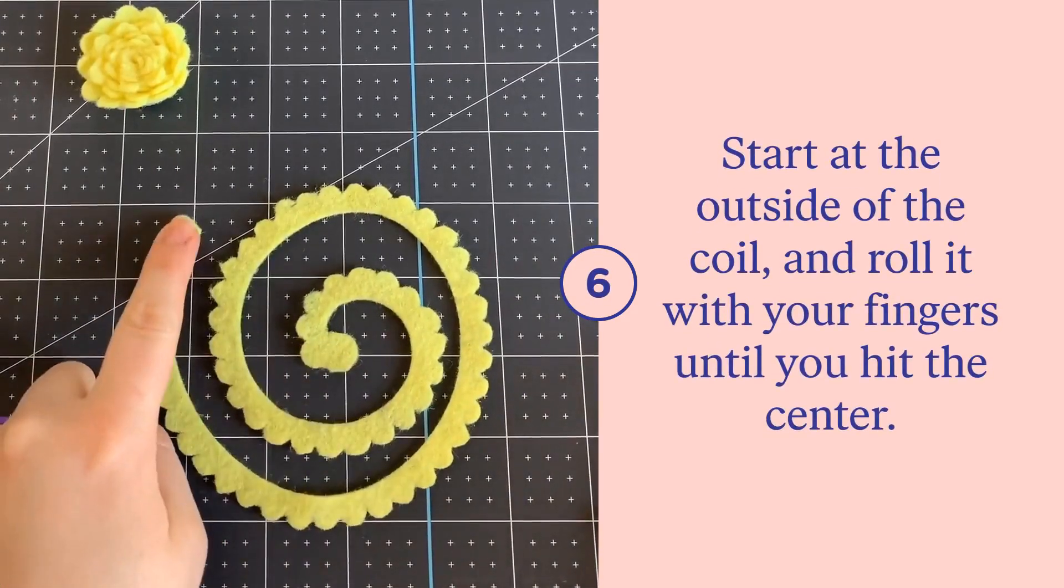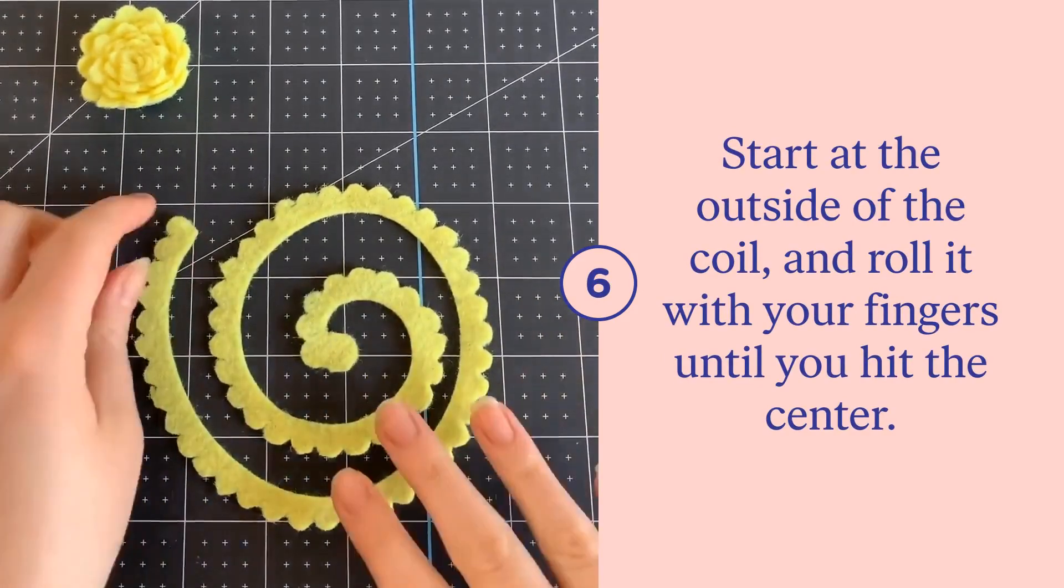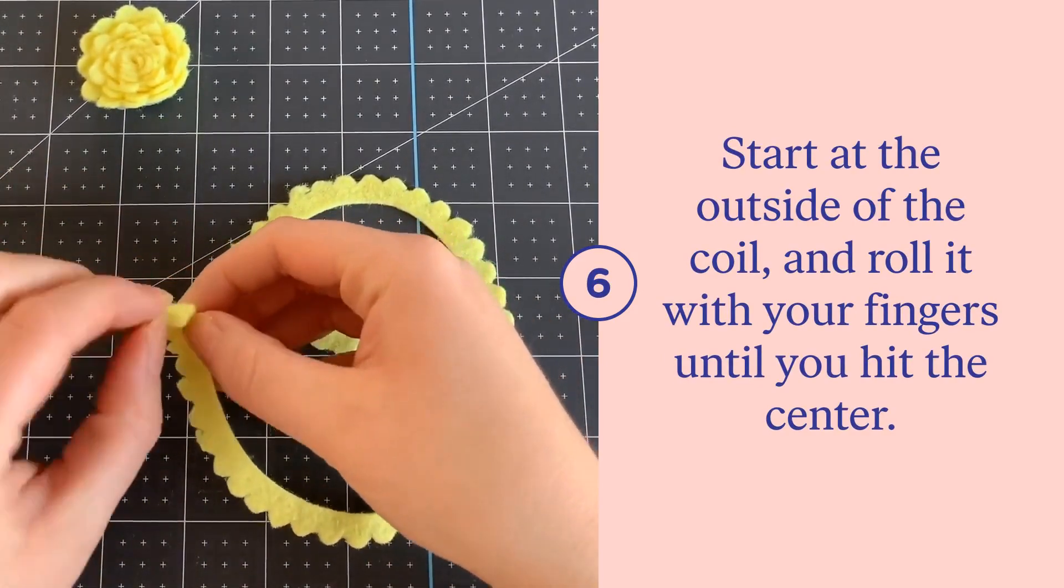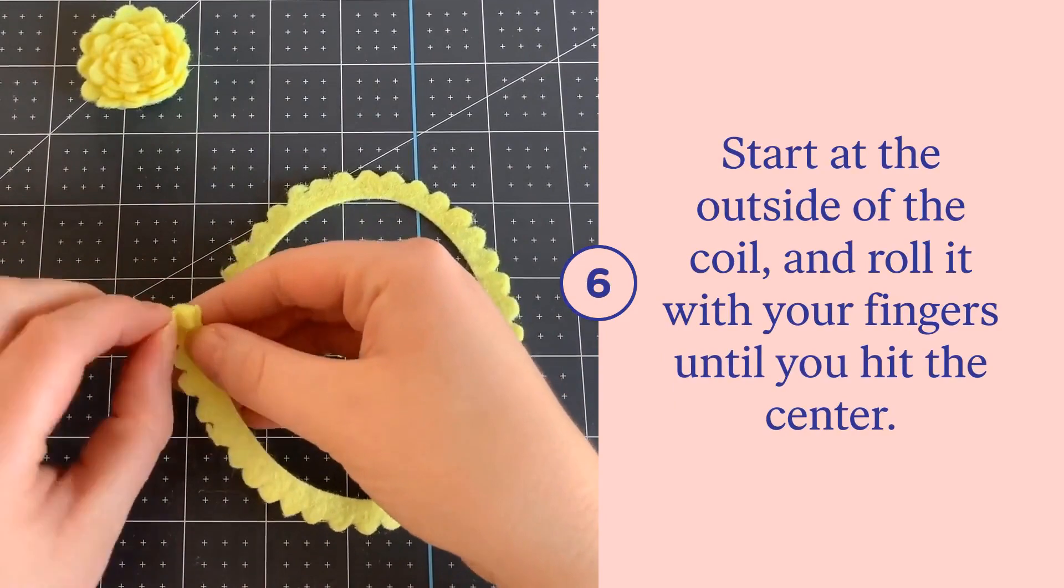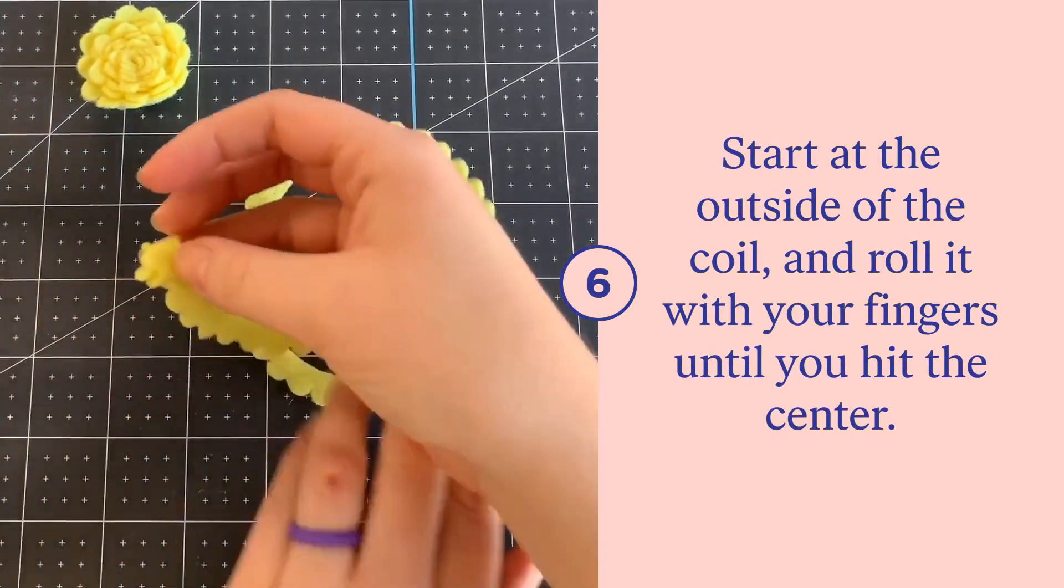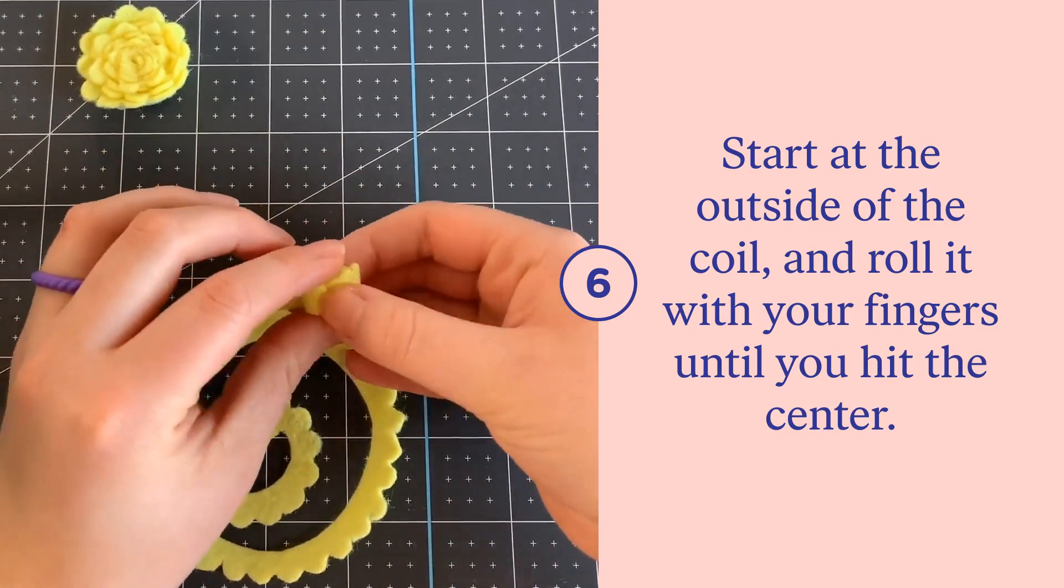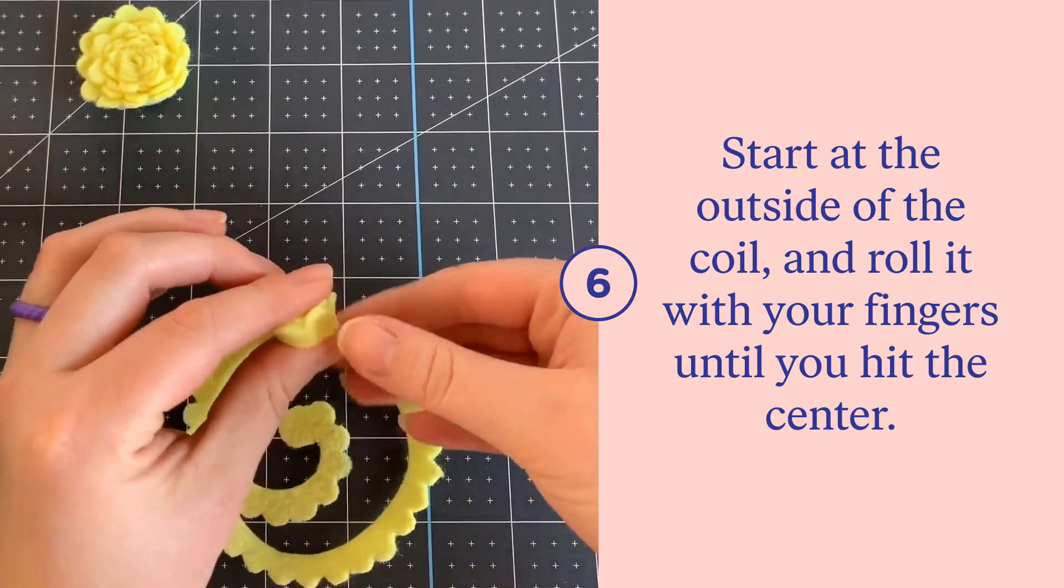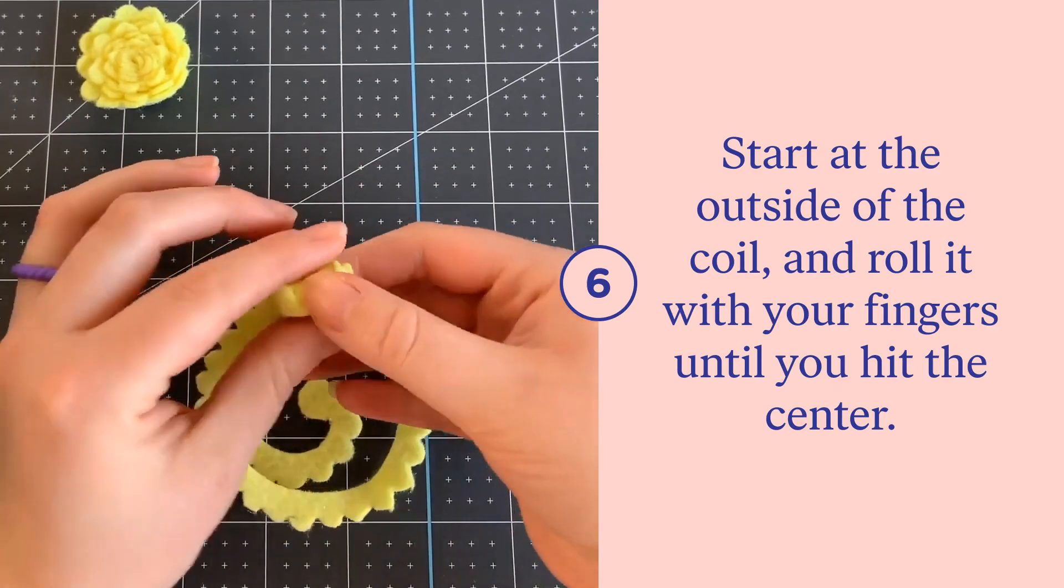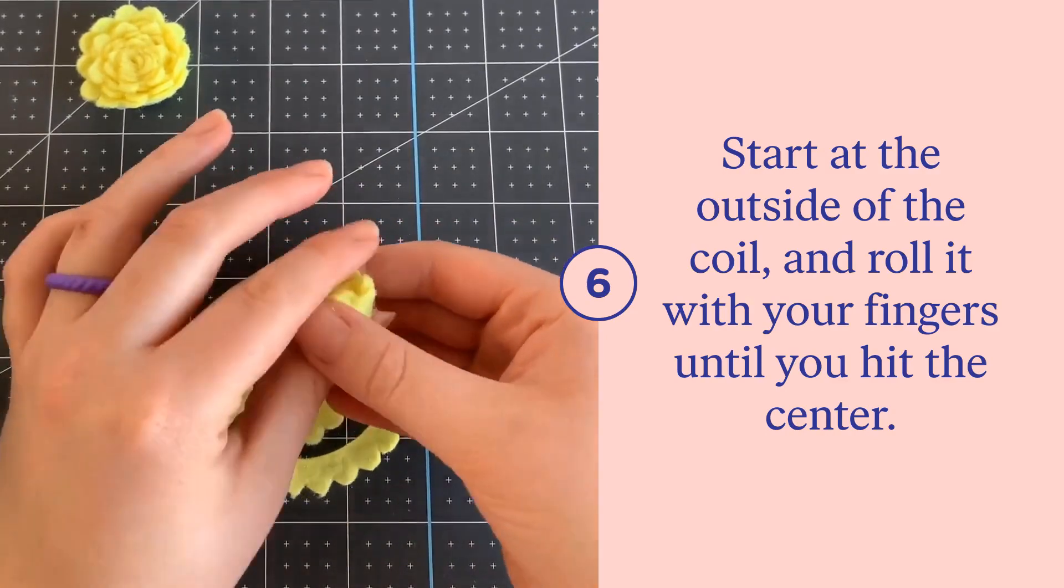The center of your flower is going to be the bottom and the outside is where you're going to start. Make sure your glue gun is heating up so that you can use it to close the flower. You basically just want to start curling the flower in as tightly as you can. Then once you get it going, you want to put it between your thumb and your first finger and just continue to roll it all the way until you hit the center.